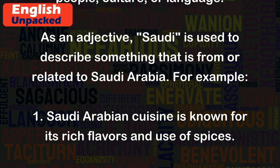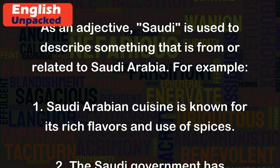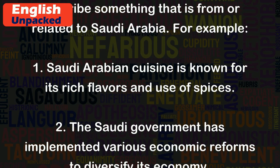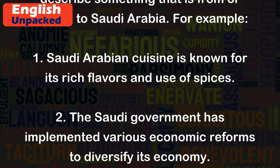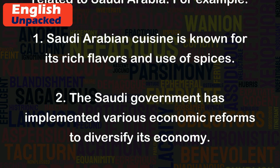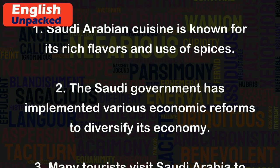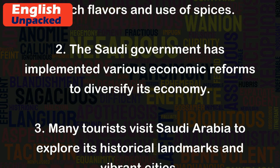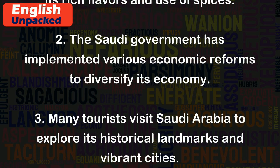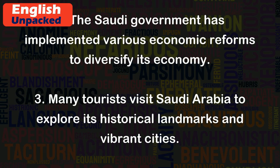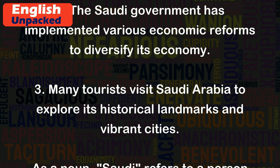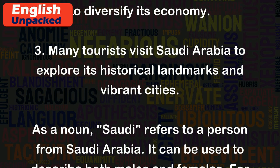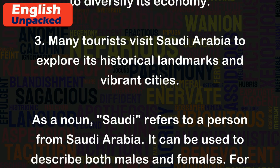For example: 1. Saudi Arabian cuisine is known for its rich flavors and use of spices. 2. The Saudi government has implemented various economic reforms to diversify its economy. 3. Many tourists visit Saudi Arabia to explore its historical landmarks and vibrant cities.